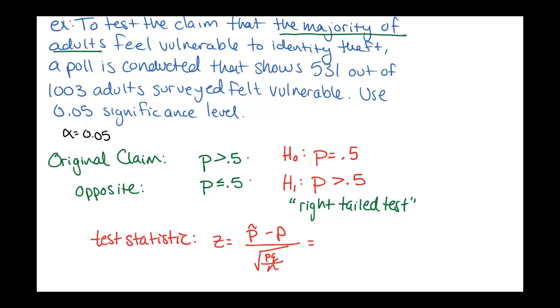So the P hat, this is our sample proportion. So this would be of the people that we actually talked to, looks like 531 out of 1,003 felt vulnerable. So our P hat is 531 out of 1,003. Then the P value, even though we don't actually know what P is, this test statistic is based upon the assumption that our null hypothesis is true. So if the null hypothesis is true, our P value is 0.5.